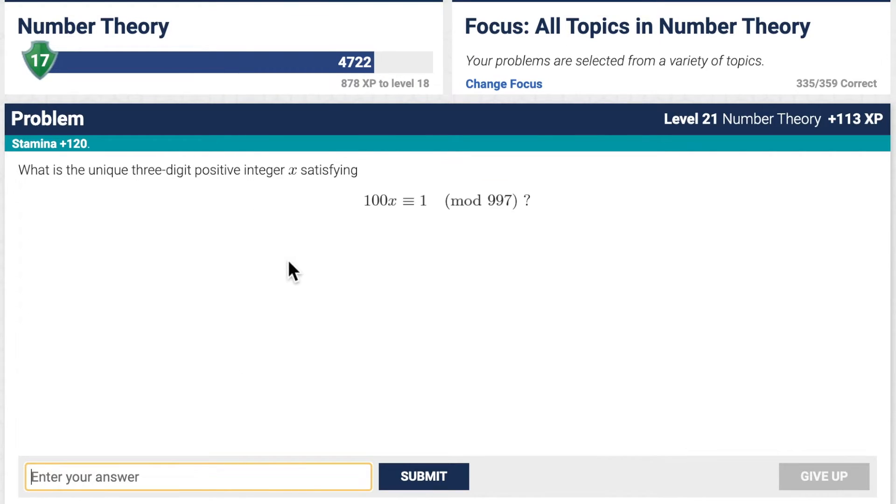Next, what is the unique 3-digit positive integer x satisfying: 100x is congruent to 1 mod 997. So we're basically just trying to find the multiplicative inverse of 100 mod 997.